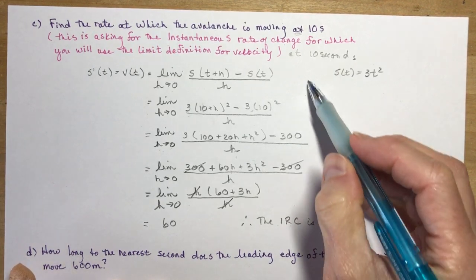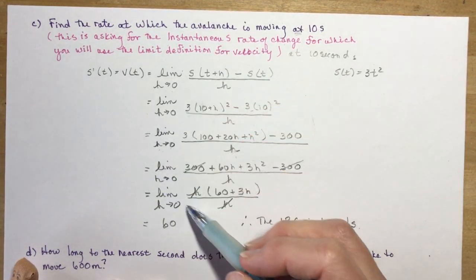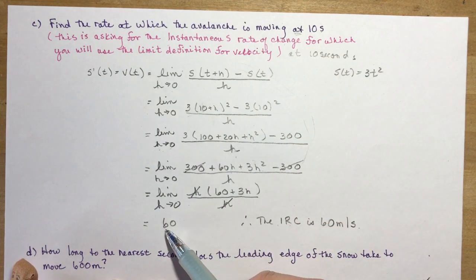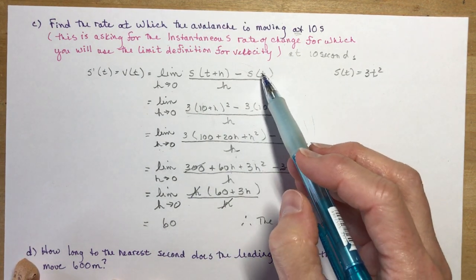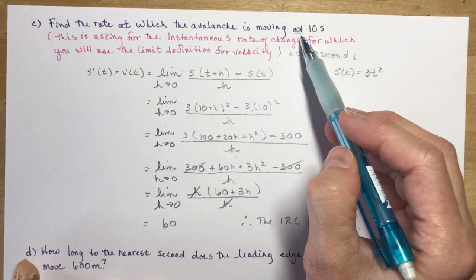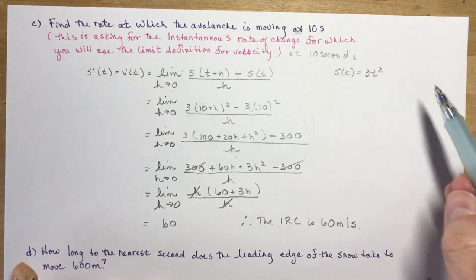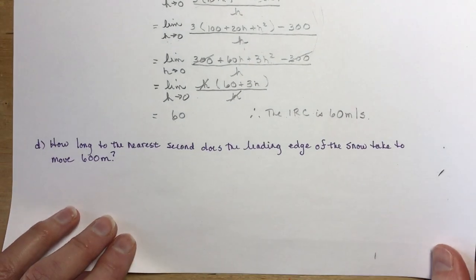So that means the instantaneous rate of change is 60 meters per second. This is using that skill you learned in 1.2 to find an instantaneous rate of change, the rate at a specific time. When you see 'at', that means IRC.